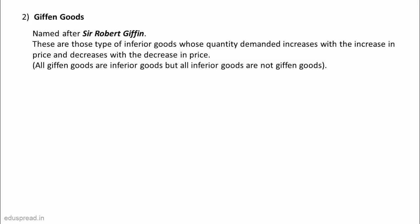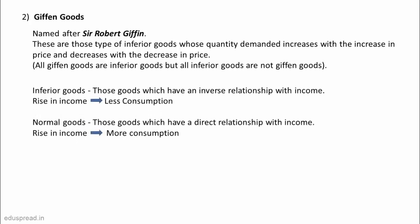If you are not familiar with the concept of inferior goods and normal goods, then for now just keep in mind that inferior goods are those goods which have an inverse relationship with income — so if your income rises, you consume less of it. On the other hand, normal goods are those goods which have a direct relationship with income — so if your income rises, you consume more of it. I will cover the concept of inferior goods and normal goods in much more detail while discussing the shifts in demand curve.